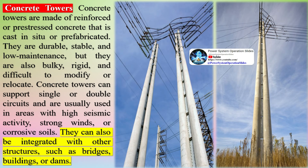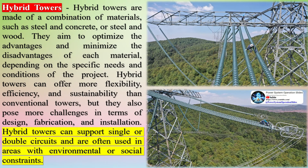Concrete towers are made of reinforced or pre-stressed concrete that is cast in situ or prefabricated. They are durable, stable, and low-maintenance, but also bulky, rigid, and difficult to modify or relocate. Hybrid towers are made of a combination of materials such as steel and concrete, or steel and wood, aiming to optimize the advantages and minimize the disadvantages of each material depending on the specific needs and conditions of the project.